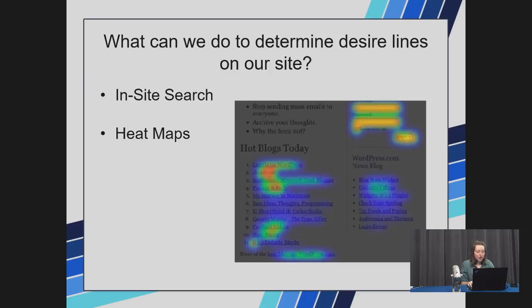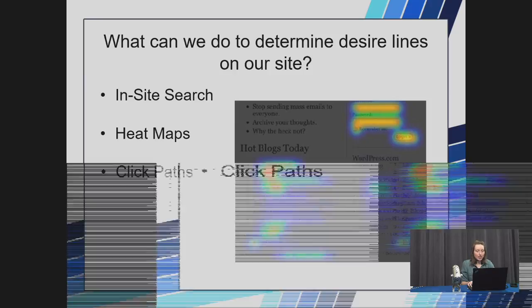Then there are heat maps, which show you where people click most frequently on your page, and this helps with seeing what parts of your page are most attractive and most interactive. Then there are click paths, which show how people travel through your site, and the best part is that you can actually see the paths people use when interacting.